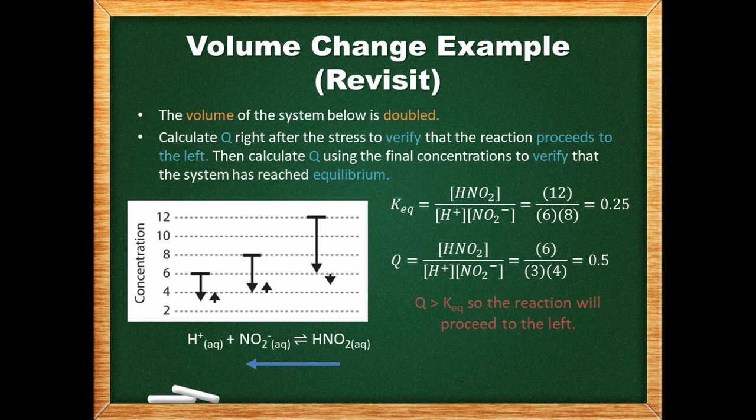The histogram also shows the final concentrations. Let's find the reaction quotient at this point to verify that these are the final equilibrium concentrations. The concentrations of hydroxide ions and nitrite have risen to 4 and 5 respectively, while the concentration of nitrous acid has decreased further to 5. When we plug these into the expression, we get a value equal to the equilibrium constant, and have thus verified that the system is back at equilibrium.